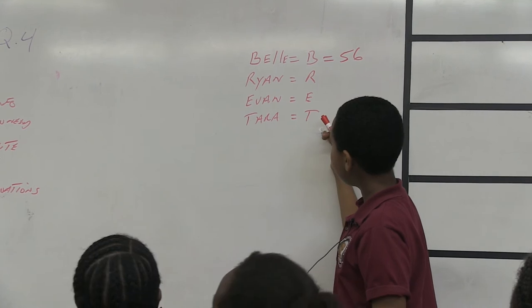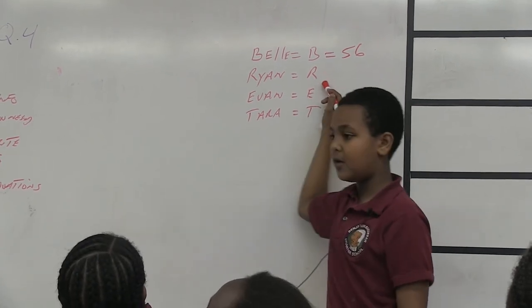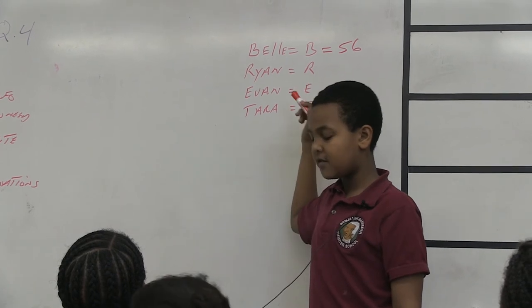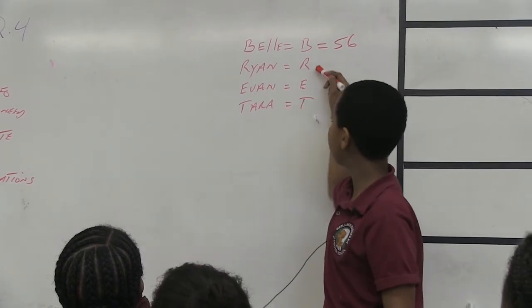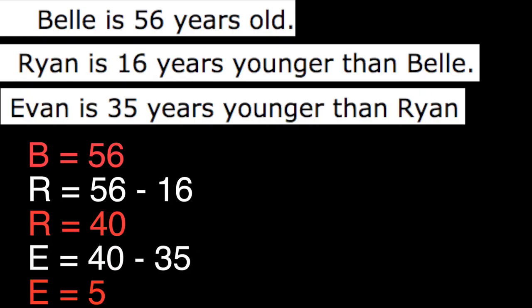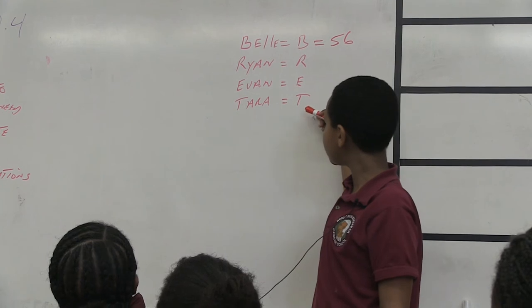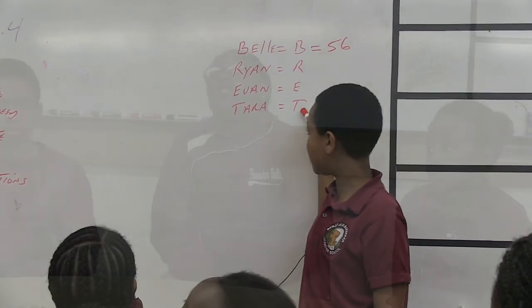After that, you can find out how old Evan is because Evan is 35 years younger than Ryan. E equals R minus 35. E equals 5. You don't necessarily need to find out how old Tara is. They put names in the question — names that didn't really matter — so it made it a little harder.